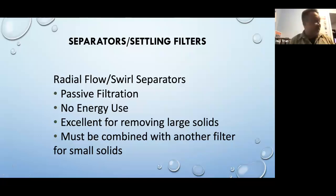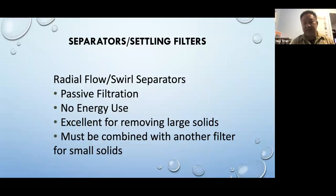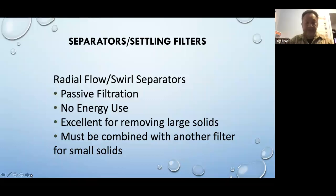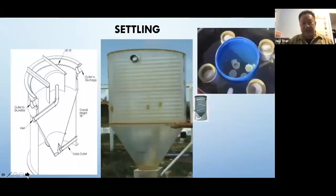Another filter option is the radial flow swirl separator, a passive filtration device with very low energy usage. It does an excellent job removing large solids, but usually needs to be combined with an additional filter for smaller particles — at best it handles particles down to about 400 microns, and anything smaller may pass through.